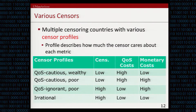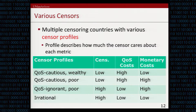Here you can see a sample number of censorship profiles. The irrational sensor, for instance, is someone who doesn't care about quality of service — the coefficient for QoS cost metrics is really low, they don't care if quality of service goes down for their users, and the monetary cost coefficient is also very low. But they really want to enforce very strong censorship, so the coefficient for the censorship metric is really high. On the other hand, a QoS-cautious wealthy sensor does care about quality of service, so the QoS cost coefficient is really high, but because it's a wealthy sensor, the monetary cost coefficient is low.